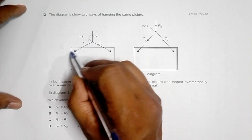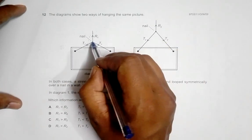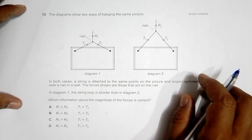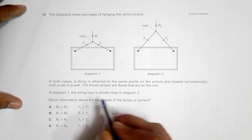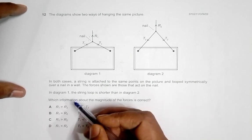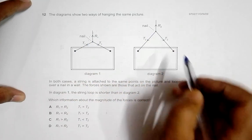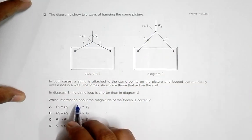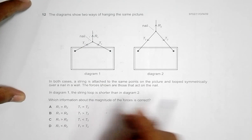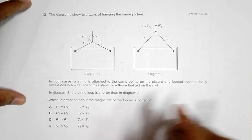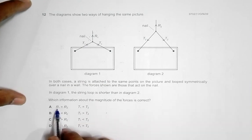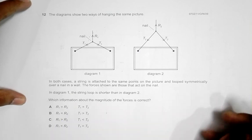In diagram 1, the string loop is shorter than in diagram 2. We have to identify which of the following equations is correct. The first one is R1 equals R2, T1 equals T2. The other options show different relations.